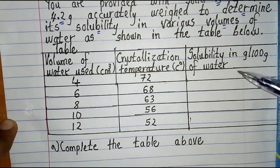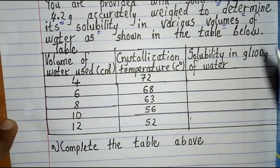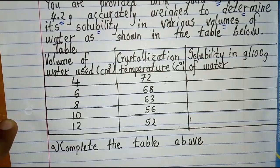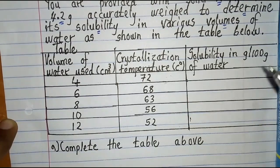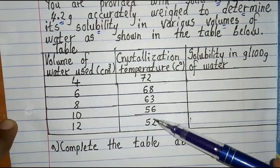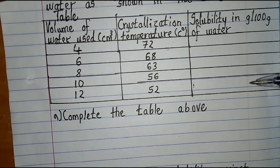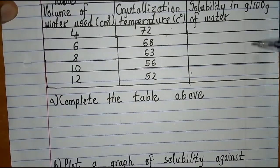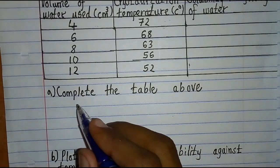You should have an idea of the trend of solubility, bearing in mind that solubility of a solid increases with increase in temperature and decreases with decrease in temperature — as you increase temperature, solubility will also increase. We are now required to complete this table, and to do so you need to use the formula for solubility.